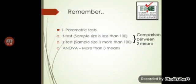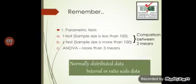ANOVA is another parametric test which is used when there are more than three groups or more than three means, because we can use it only when there is quantitative data. The takeaway message here is that parametric tests are used when there is normally distributed data and quantitative data, meaning the scale of the data is interval or ratio.